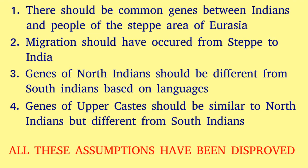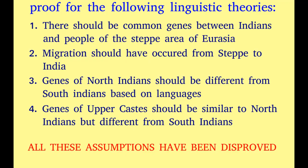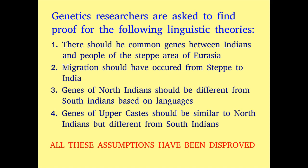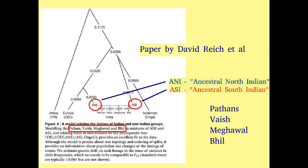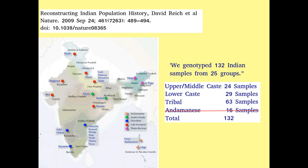A close study of many genetics papers from Western laboratories reveals how they went after these targets. They searched for common genes between people of the Eurasian steppe region and Indians and tried to show that North-West Indians had inherited genes from the steppe. North-West Indian genes had to be different from South Indian genes, and genes of forward castes were supposed to be similar to steppe genes while genes of backward castes were supposed to be like South Indian genes.